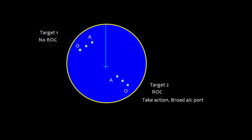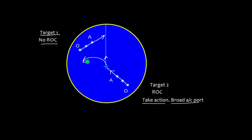Consider a target plotted at equal intervals — moving such that it will pass ahead. This is relative motion; there is no risk of collision, so no action is needed. For another target whose relative motion shows it will collide, take a broad alteration of course to port, away from that vessel.